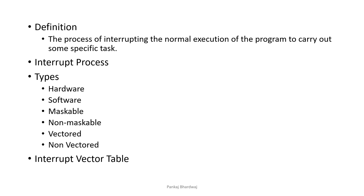There are hardware and software interrupts, maskable and non-maskable interrupts, and vector and non-vector interrupts. The definitions of these interrupts are similar to what we have already discussed in 8085, so there is no need to go through the definitions again. We will discuss the processes, types, and examples of interrupts in 8086, and finally the interrupt vector table, which is the most important segment of this presentation.